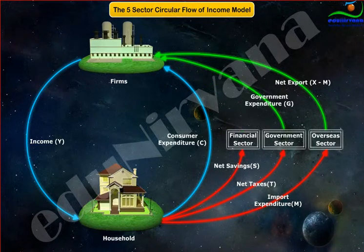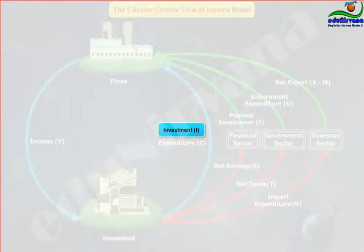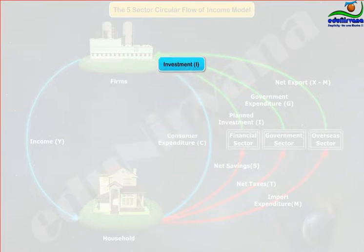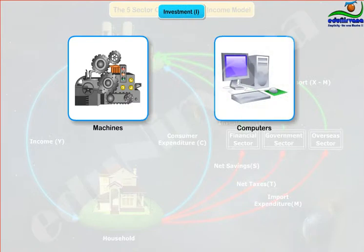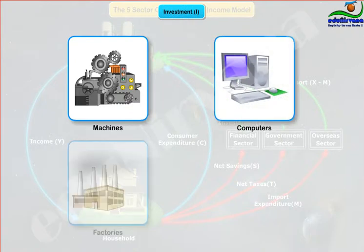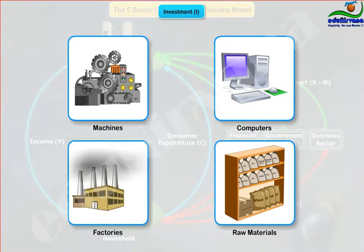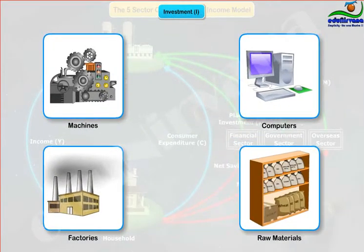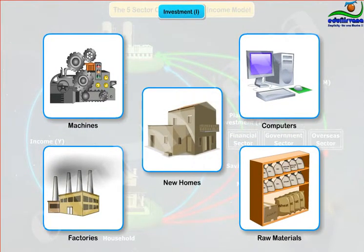Second, planned investment spending (I) — the total planned spending by businesses on new physical capital: machines, computers, factories, raw materials and the like, plus planned spending on new homes.